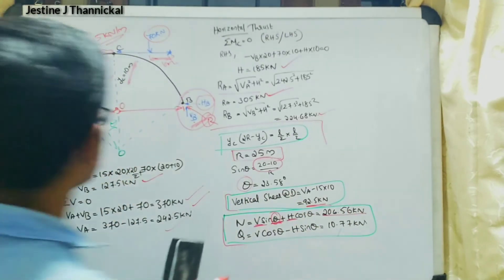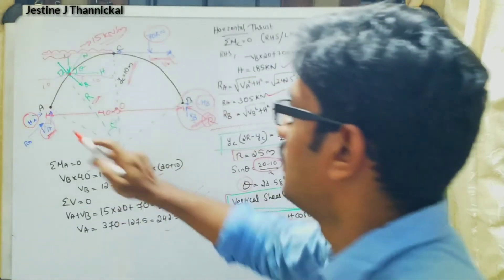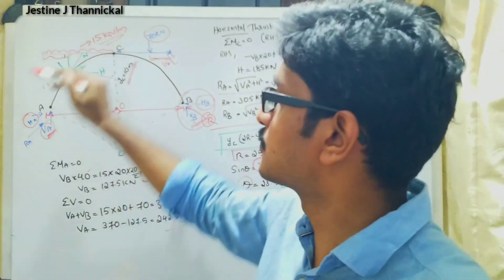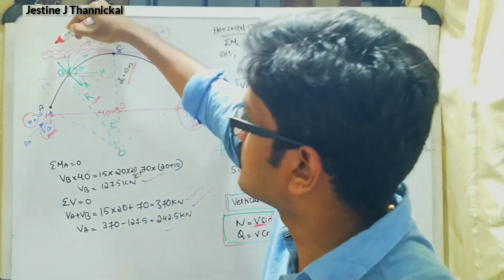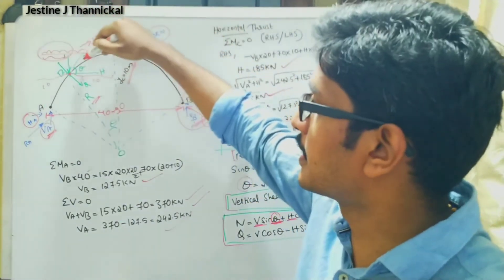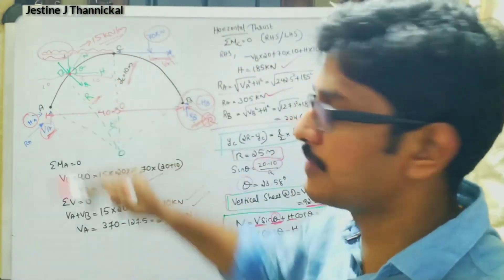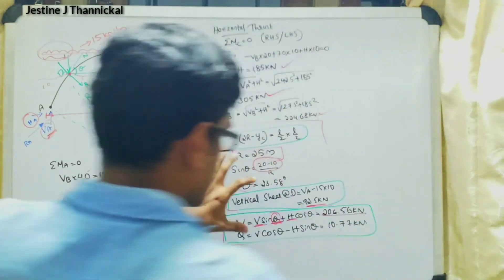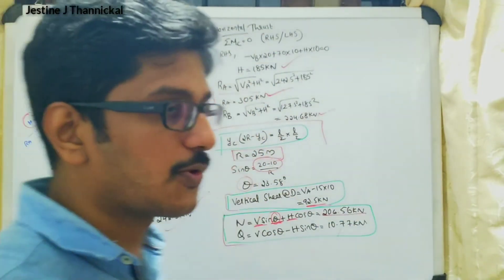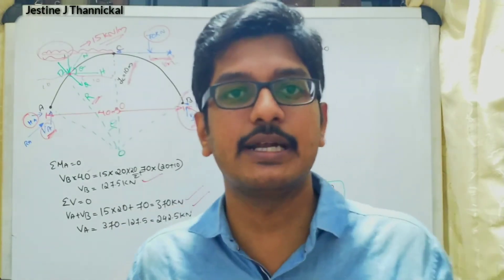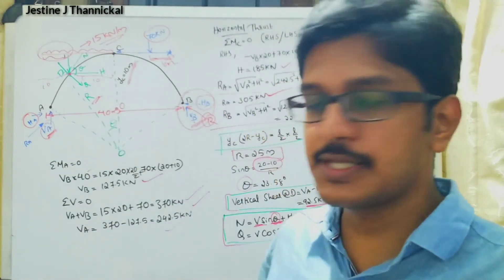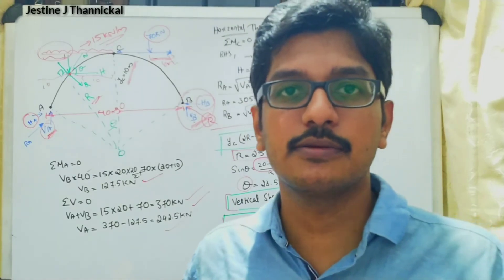The vertical shear at D accounts for VA and the UDL force of 15 multiplied by 10 acting on the left portion. All reactions — vertical reactions, horizontal reactions, normal thrust, and radial shear — have now been found. With this, we conclude today's session. Thank you all.